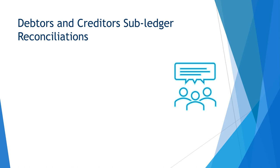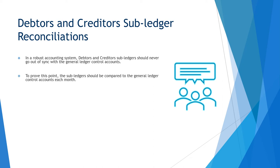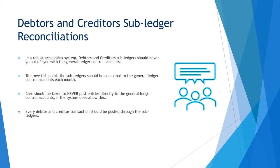This section will give a brief overview of debtors and creditors subledger reconciliations. In any robust accounting system, debtors and creditors subledgers should never go out of sync with the general ledger control accounts. To prove this point, the subledgers should be compared to the general ledger control accounts each month. Care should be taken to never post entries directly to the general ledger control accounts, even if the system does actually allow this.